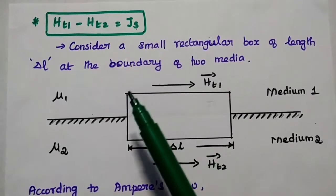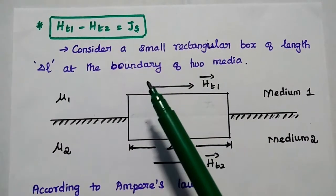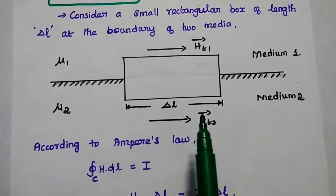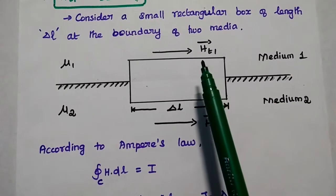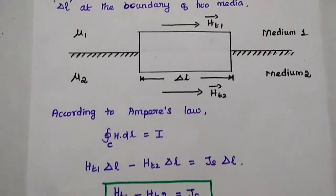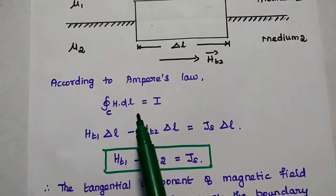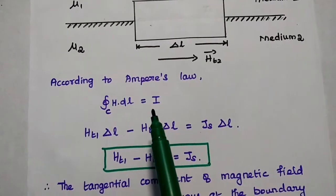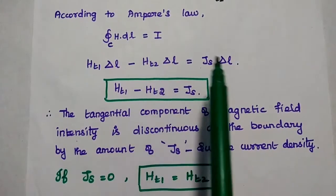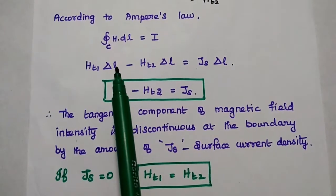The next boundary condition is that the tangential component of magnetic field intensity is discontinuous. For that, we consider a small rectangular loop of length delta-L at the boundary of the two media. The tangential component of magnetic field intensity is HT1 in one direction for medium 1, and HT2 for medium 2. We use Ampere's circuital law: the line integral of magnetic field intensity about any closed path is equal to the direct current enclosed by that path. The surface current density JS times delta-L gives the enclosed current, and the integration gives HT1 delta-L minus HT2 delta-L. Cancelling delta-L throughout: